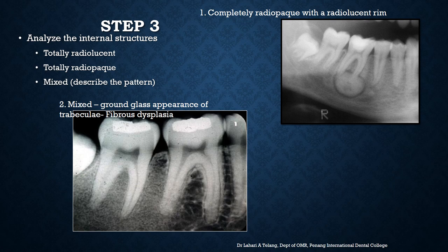Step three is to analyze the internal structure of the lesion — is it totally radiolucent, totally radiopaque, or mixed? When mixed, describe the visible pattern. For example, in one radiograph you may see a completely radiopaque lesion surrounded by a radiolucent rim, whereas another radiograph may show a ground-glass appearance, which is very typical of fibrous dysplasia. Terms like ground glass or orange peel are commonly used to describe abnormal trabecular patterns.